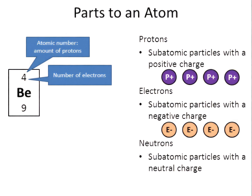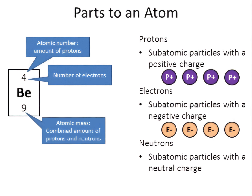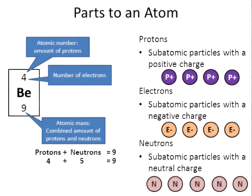The third part to an atom is called the neutrons. Now be careful — the number nine in the square is not the number of neutrons. The nine is when you add up the combined amount of protons and neutrons. For beryllium, four protons plus beryllium's neutrons will equal nine. Simple math: there's going to be a total of five neutrons.